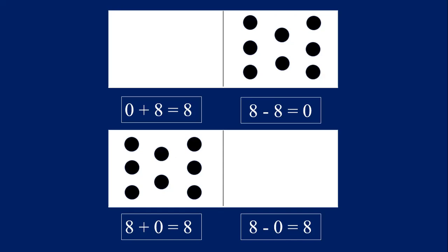Fact families are three numbers that fit together as a set — that's why they're called families. The first fact family for the number eight has the numbers zero, eight, and eight.